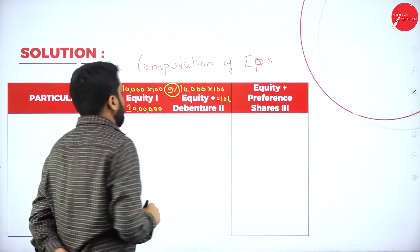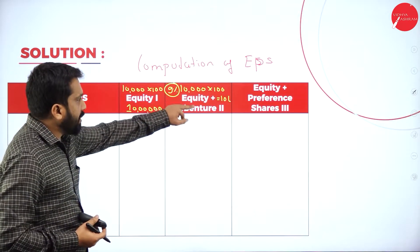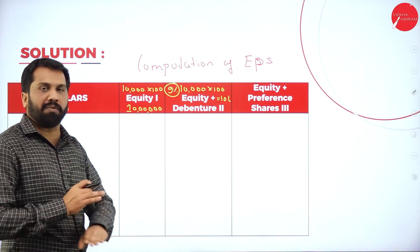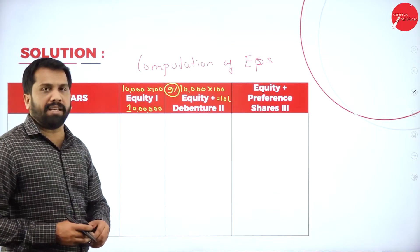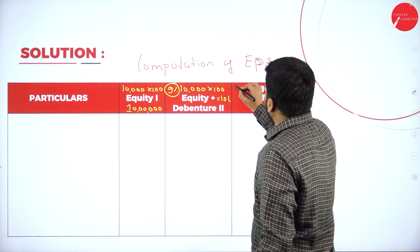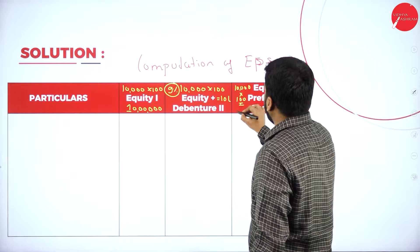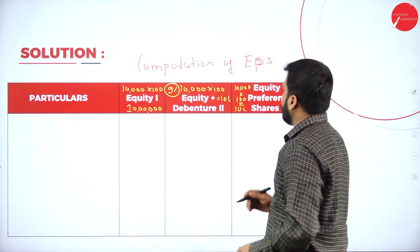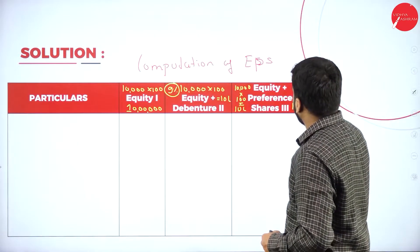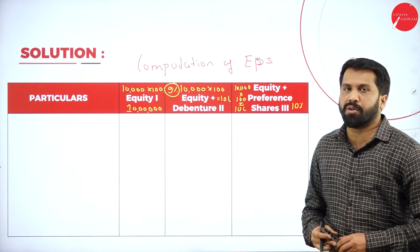Why have I taken 'equity plus'? Equity plus means we already had existing equity earlier. For this calculation, we don't include the old existing equity separately — it is already existing. The third alternative with preference shares has 10%. So equity is over, Alternative 2 is over, Alternative 3 is also set up. Now we will go through them one by one.